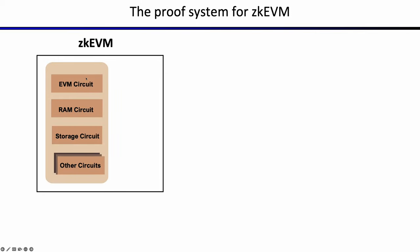Here are all the circuits we need for ZK-EVM: the EVM circuit for state transitions, a RAM circuit, and a bunch of others like ECDSA circuit. In theory, you need to generate proof for each circuit and verify all the proofs to know that a transaction is executed correctly. But in practice, it's too expensive to verify all those proofs. So instead, we have an aggregation circuit to prove that all those proofs from those sub-circuits are valid. In the end, you will only have one aggregation proof instead of many different proofs, which can massively reduce the verification overhead.